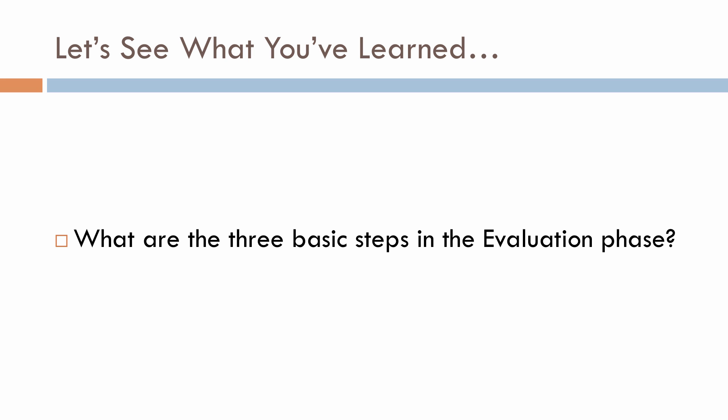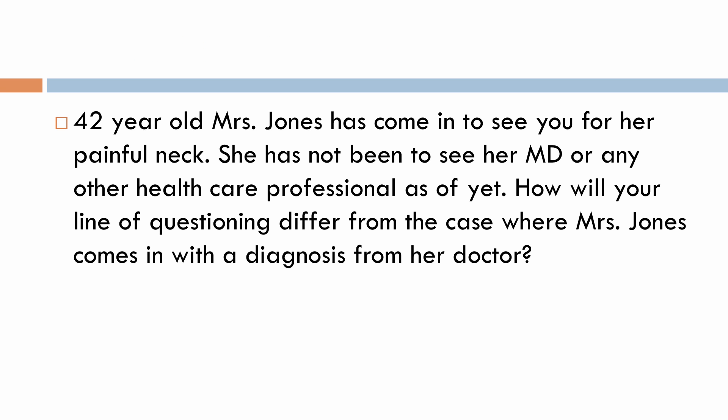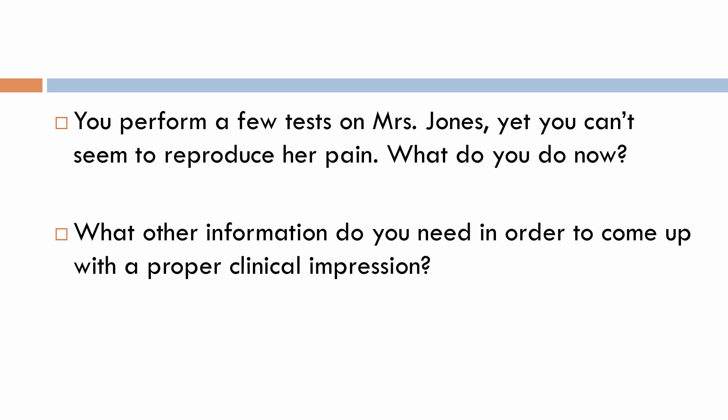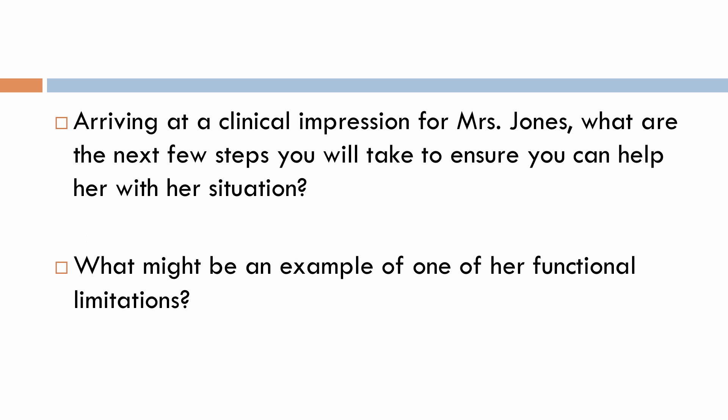Let's see what you've learned. What are the three basic steps in the evaluation phase? A 42-year-old Mrs. Jones has come in for her painful neck and has not seen her MD or any healthcare professional yet. How will your line of questioning differ from the case where Mrs. Jones comes in with a diagnosis from her doctor? What is your next step after asking all the relevant questions? You perform a few tests on Mrs. Jones but can't reproduce her pain — what do you do? What other information do you need for a proper clinical impression? What are the next steps to ensure you can help her, and what might be an example of one of her functional limitations?